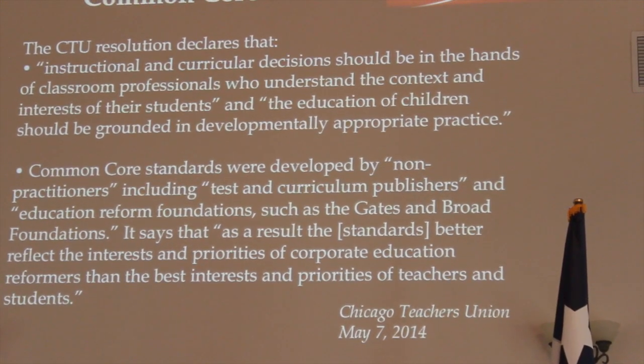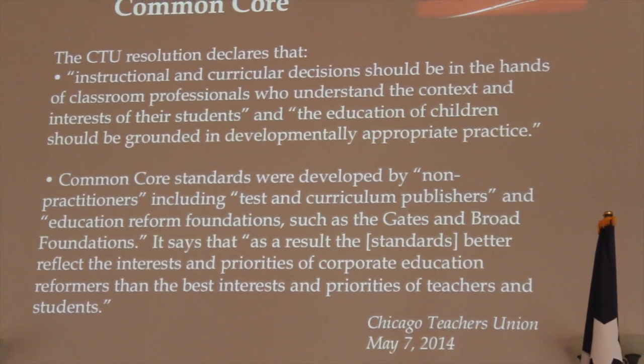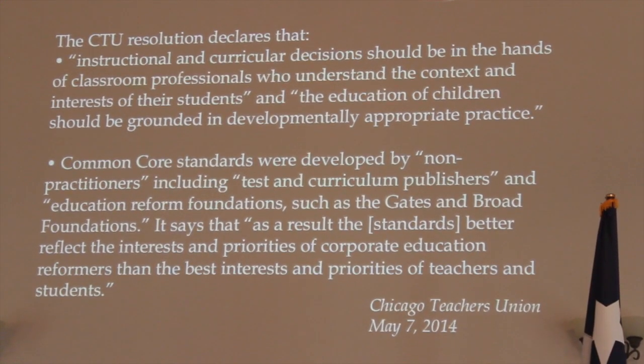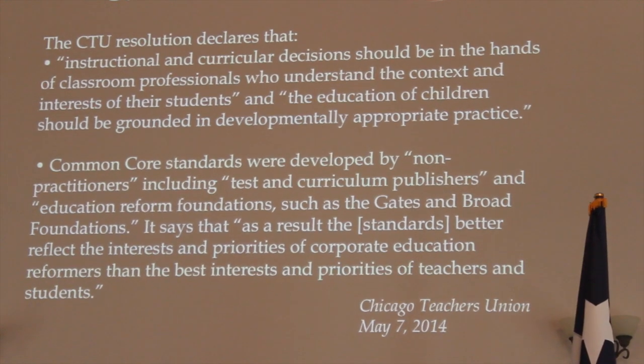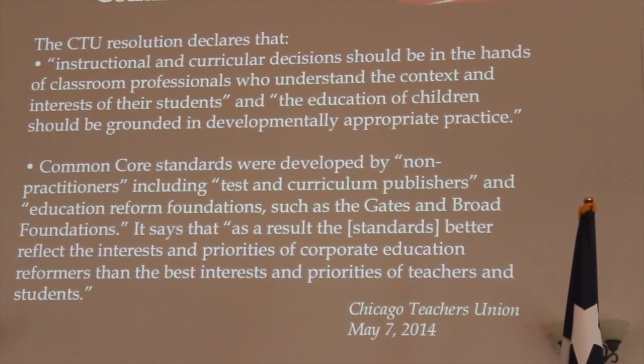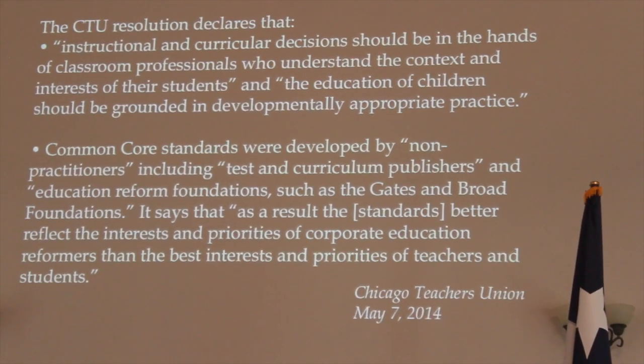Who determined that American schools were failing? It wasn't teachers, it wasn't students, it wasn't the tests we had — it was education companies. Because the more kids fail, the more you have to buy new books, new textbooks, new exams. And so every five years or so since the late 1970s, we deem the current system a failure. Billions and hundreds of billions over the last 50 years have been spent rolling out the next new thing. Don't you think it's interesting that before anybody in Texas knew what Common Core was, before your legislature had any idea, your schools had already paid hundreds of millions of dollars buying Common Core textbooks? Common Core standards were developed by non-practitioners, including test and curriculum publishers.